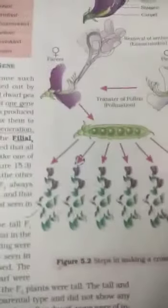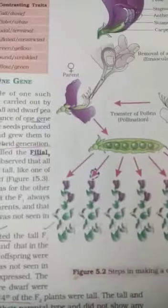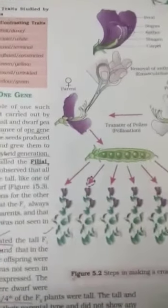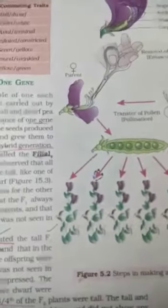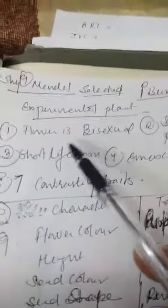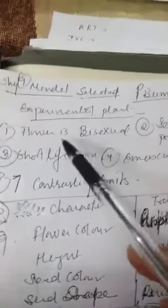So why Mendel has selected the pea plant? The first question is what was Mendel's experimental plant? So Mendel's experimental plant was Pisum sativum. Now the second question is why Mendel has selected the Pisum sativum. The answer I have written here.